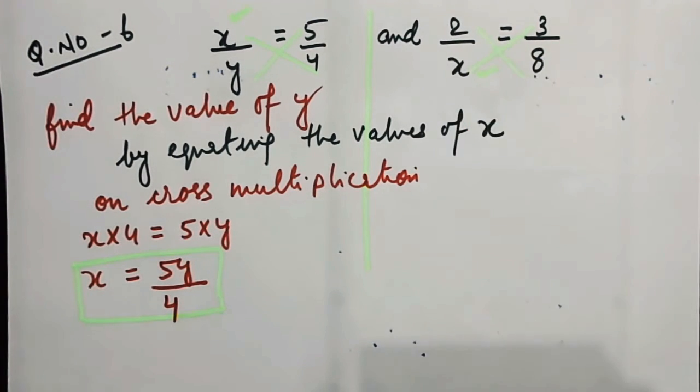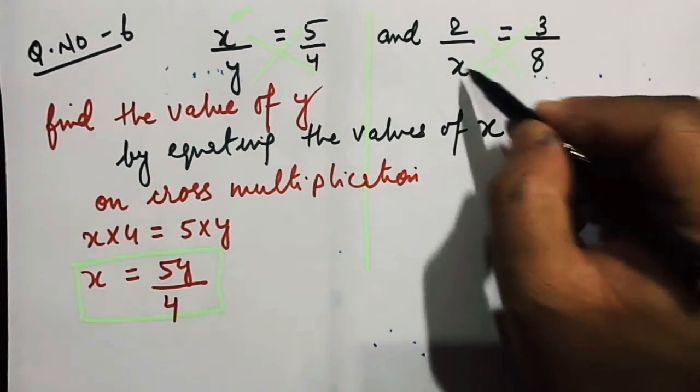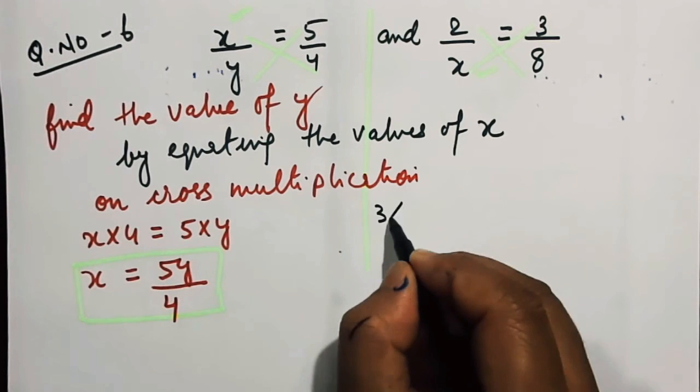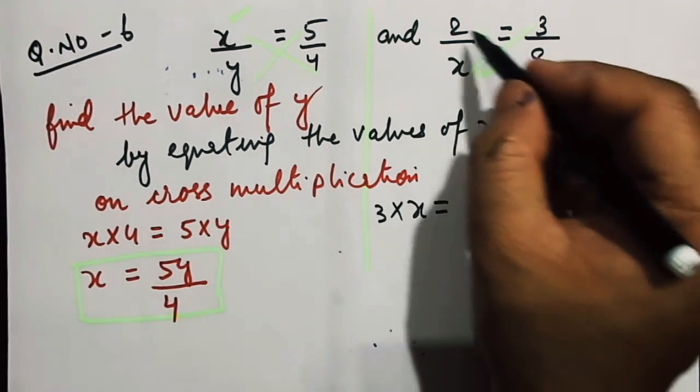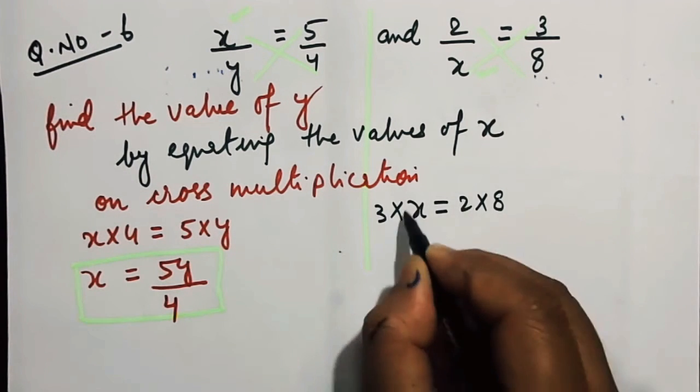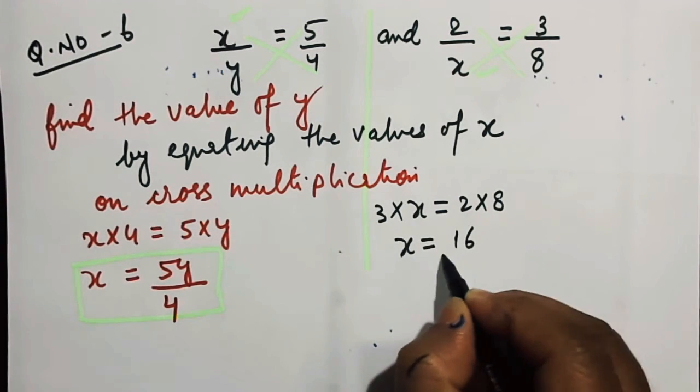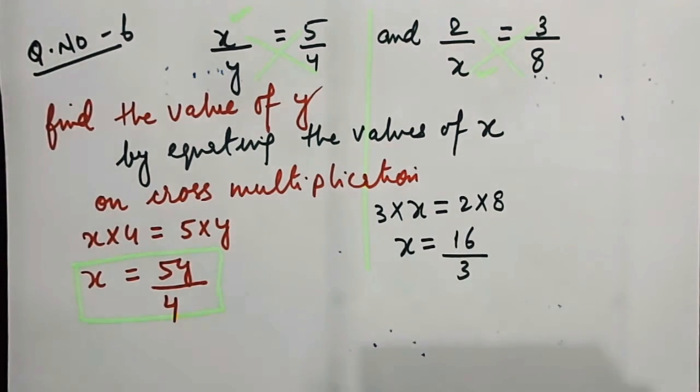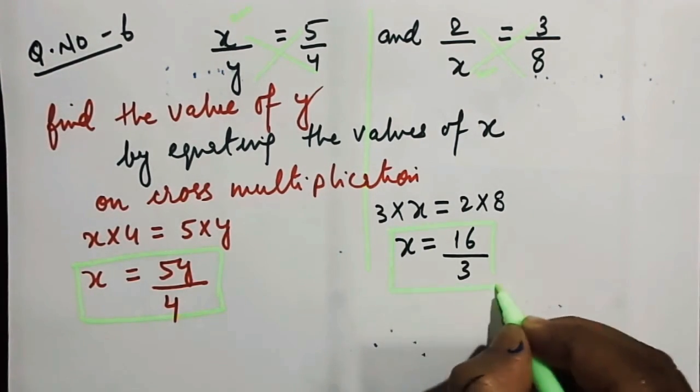Again, when you look at this, on cross multiplication, 3 into x will be equal to 2 into 8, or x will be equal to 16 by 3. So I got the value of x here also.